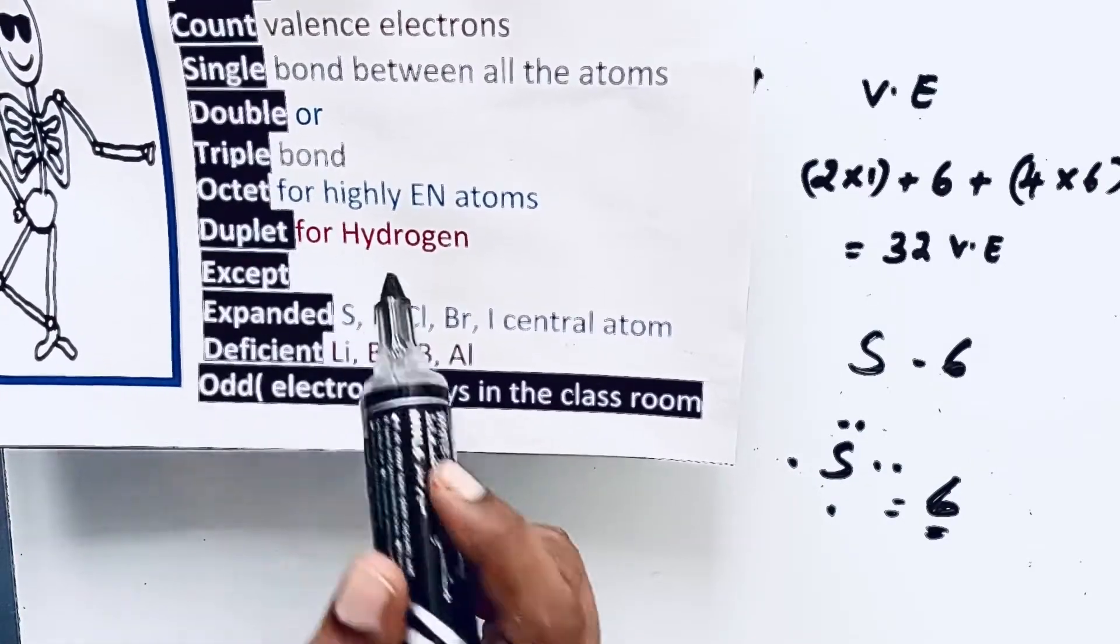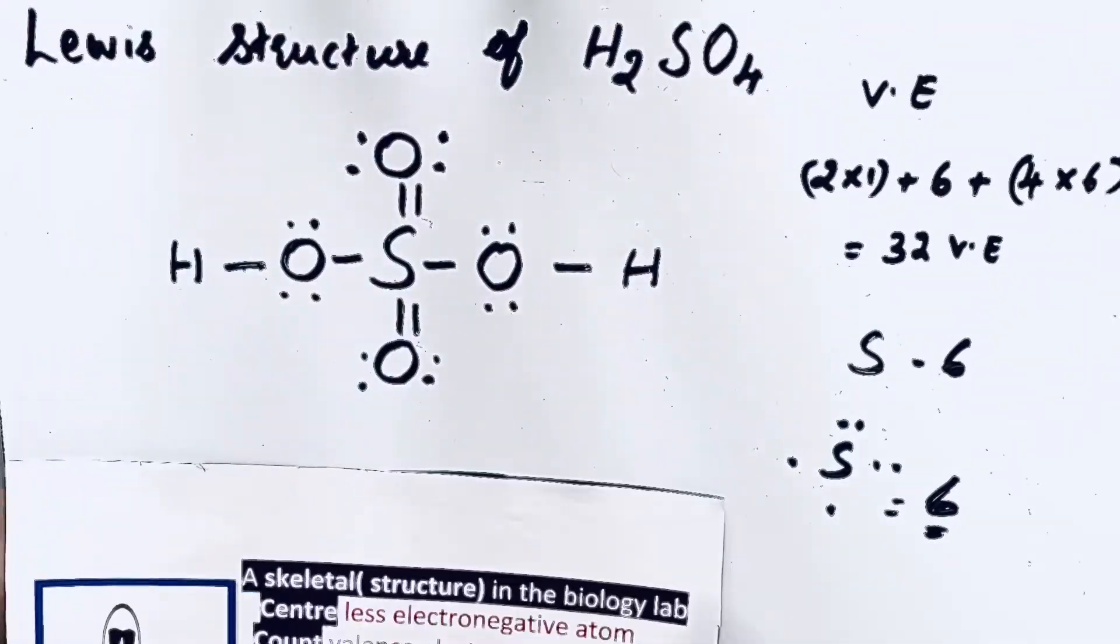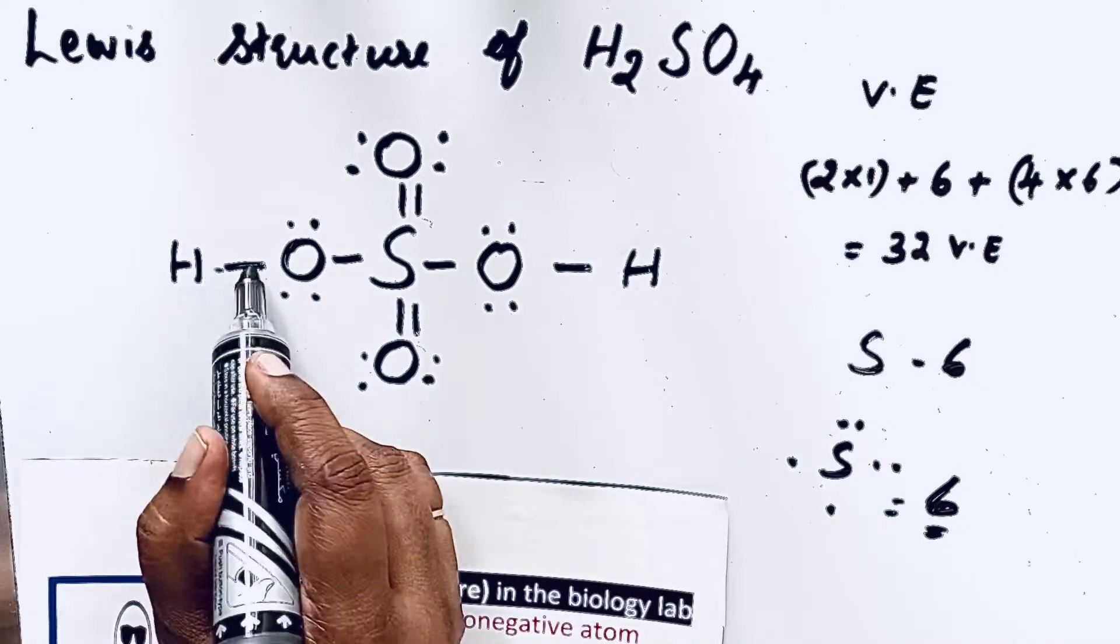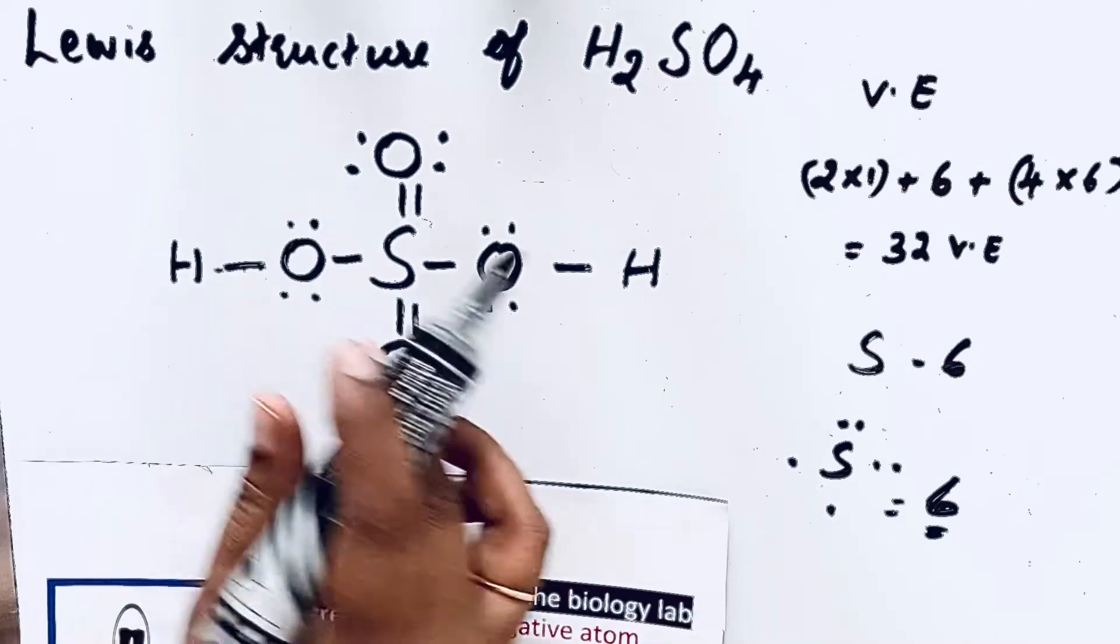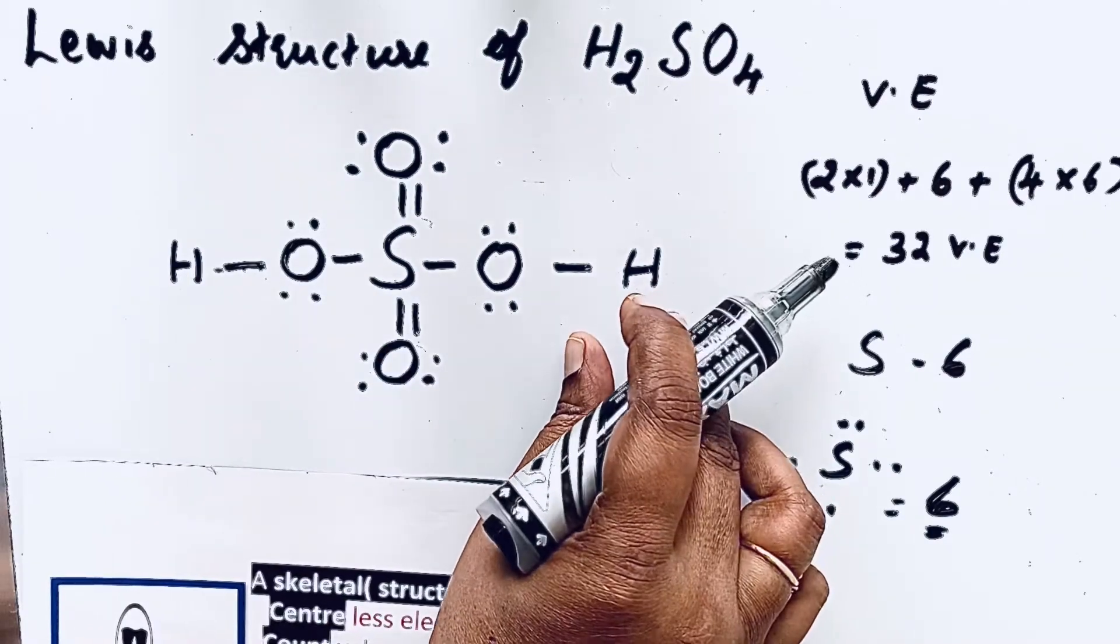Next one: duplet for hydrogen. Duplet means two. So here see, only one single bond, so two electrons only. Duplet configuration completed for hydrogen. For this hydrogen also duplet is completed.